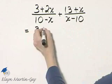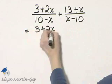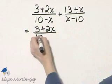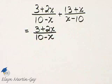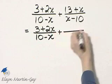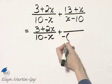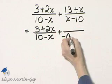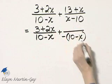I'll write that as, I'll go ahead and rewrite the first rational expression. It makes no difference which denominator you choose, but choose one and make it the opposite, and if it's the opposite, it is 10 minus x.